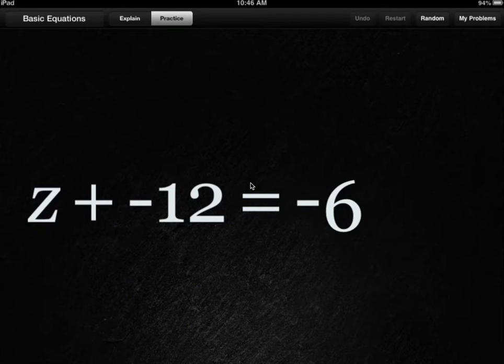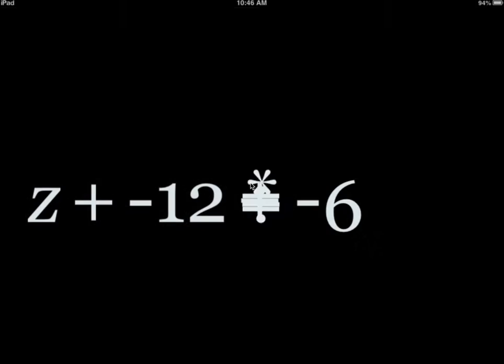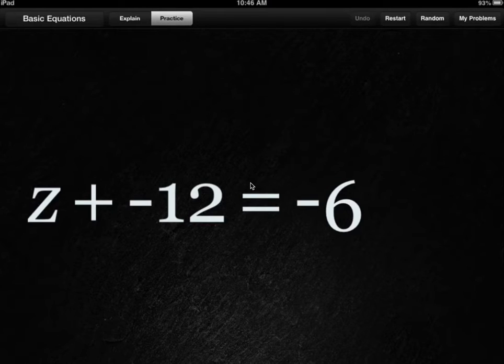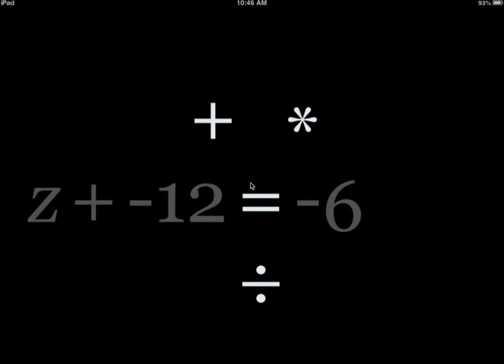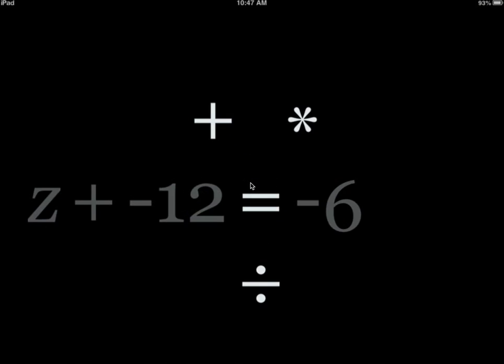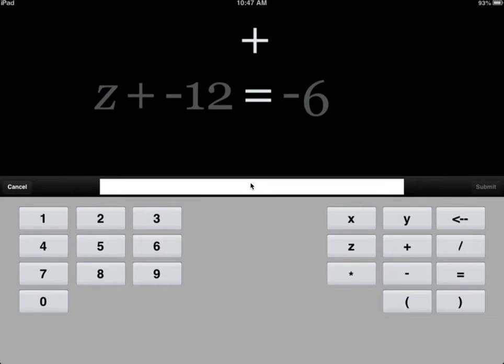So some pretty cool stuff now. As we get going here, a new update that they recently released that I really like, and it addresses the issue of students just memorizing that if you bring a number to the other side, the sign flips and so forth. If I click on the equal sign, it allows me to use opposite operations. So you can instruct your students to click on the equal sign and say, okay, if you want to get rid of this negative 12, what must you do? Well, I know I must add. So I'll click the add button and we'll write what it is that we want to add on both sides. So in this case, it's 12 and I'll submit.